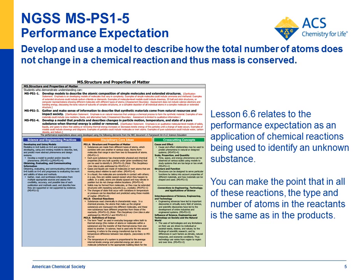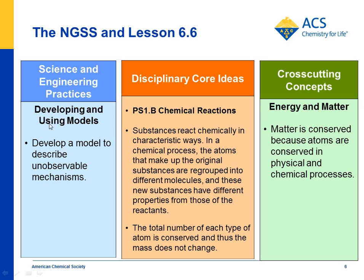It's more closely matched up with a particular disciplinary core idea — that substances have characteristic chemical reactions. The foundation boxes say that you can develop a model, but in this lesson students don't really develop models. Instead, they're creating a way of finding out what an unknown substance is by using the characteristic chemical reactions of each substance. The main takeaway is that substances react chemically in characteristic ways, and that matter is conserved because atoms are conserved in physical and chemical processes.